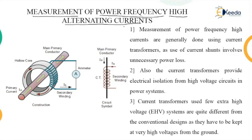So let us see what the first method says. Basically, there is not much discussion required here as the resistive shunt is one of the methods that can be used, and it is similar to the measurement of high DC current.